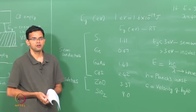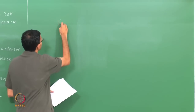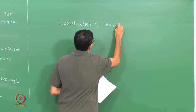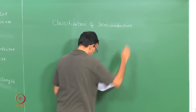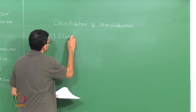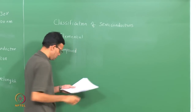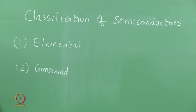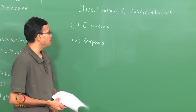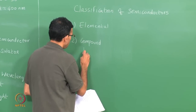Let us look at some classifications of semiconductors. One method distinguishes elemental and compound semiconductors. Those semiconductors that are elements are elemental semiconductors. You can also have compounds whose band gap is less than 3 eV — these are compound semiconductors.